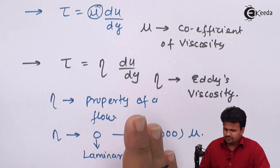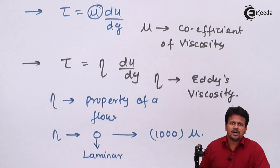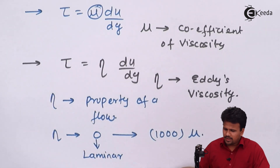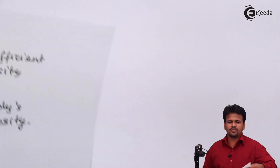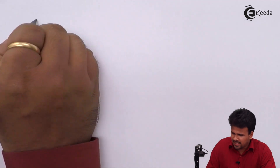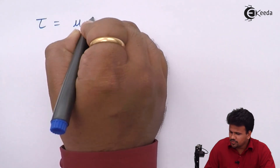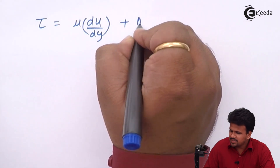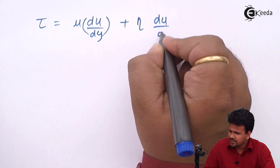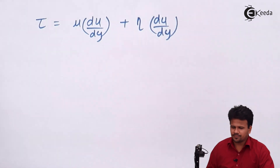Since it is a property of flow, it can change from one point to another. In general, for a turbulent flow, the total shear stress tau can be represented as mu times du/dy plus eta times du/dy. This is the shear stress equation for a turbulent flow.